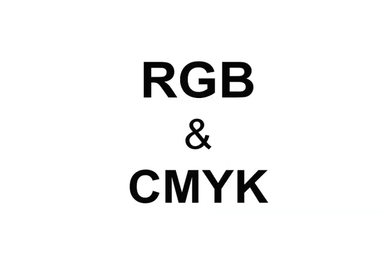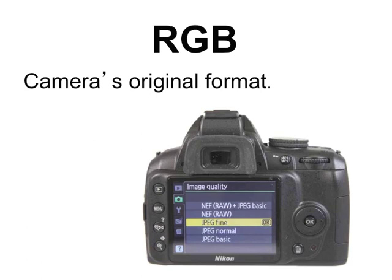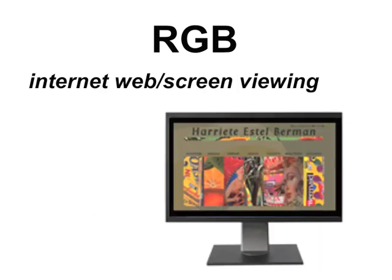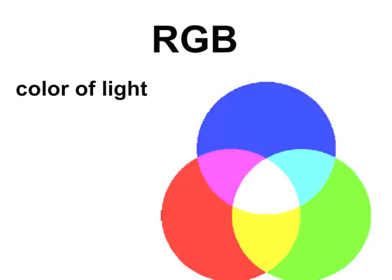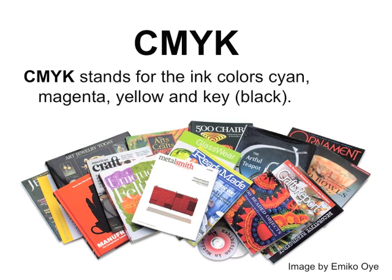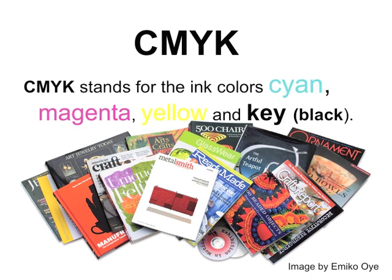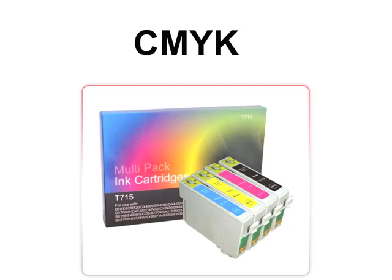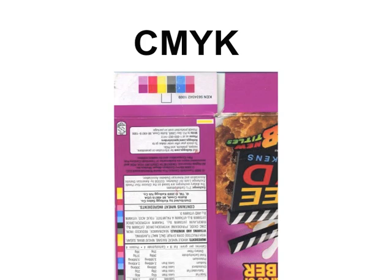RGB and CMYK are something that's easy to confuse. RGB is your camera setting — that's how you take your photos — and it's used for the internet. It stands for the color of light: red, green, blue, like theater lights. CMYK is your print setting — cyan, magenta, yellow, and black. You've actually seen CMYK on your printer cartridges and on boxes and packaging. So we're more familiar with CMYK than we think.